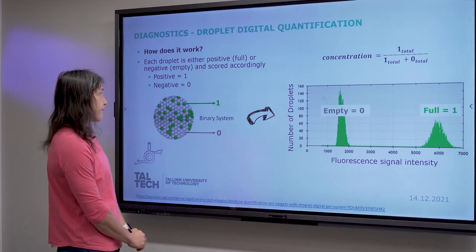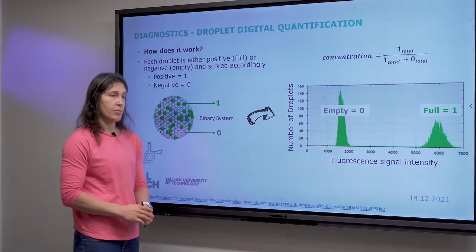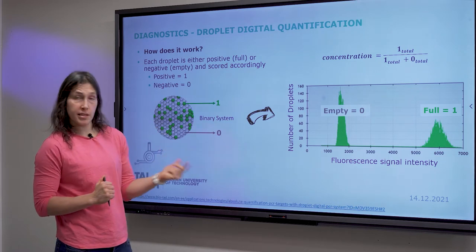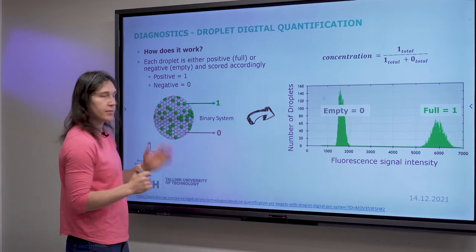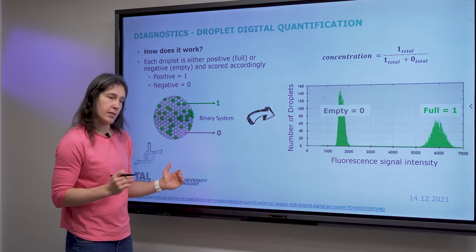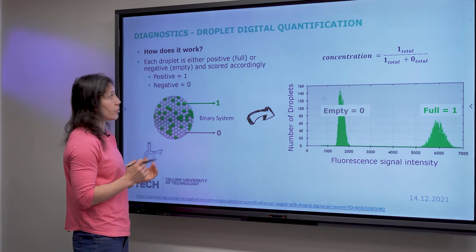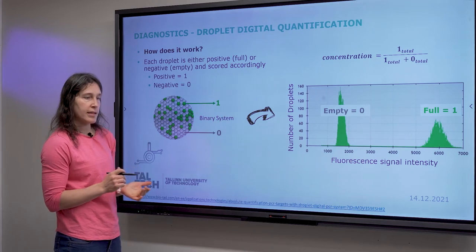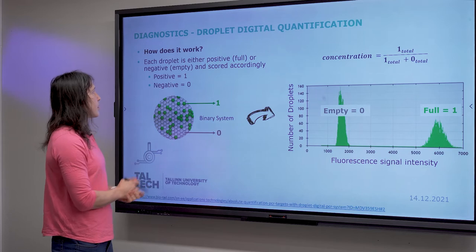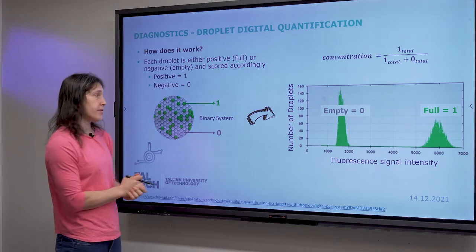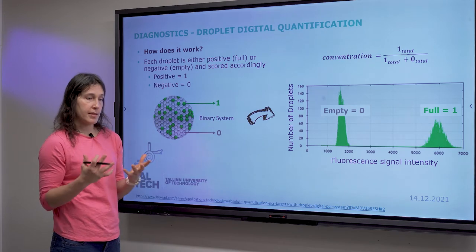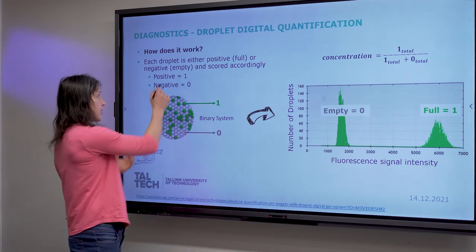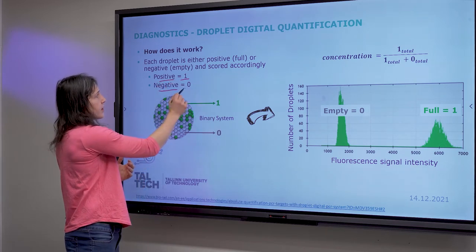So, diagnostics. In diagnostics, most commonly what droplet microfluidics are used for is droplet digital quantification. How does it actually work? Well, each droplet either has something — it's full, which we call positive — or it's negative, which means you have an empty droplet, and then you score it accordingly. So positive gets number one, negative gets zero.